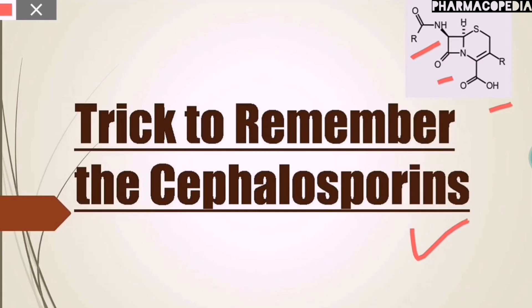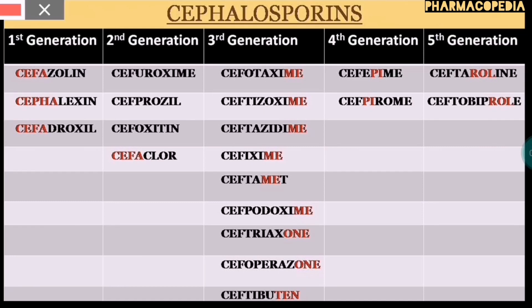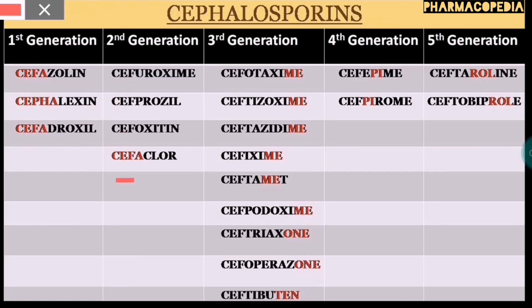Now moving ahead to the trick to remember the cephalosporins. Cephalosporins are categorized into five generations. The first generation consists of cefazolin, cephalexin, and cefadroxil. You just have to remember the term 'cepha' in order to recognize the first generation cephalosporins. The exception here is the cephalosporin which belongs to the second generation.